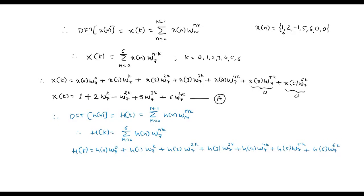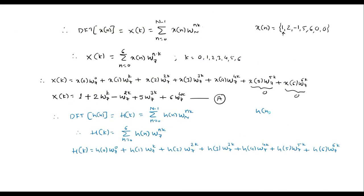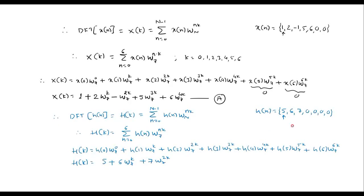Here H(n) values are H(0)=5, H(1)=6, H(2)=7, and the rest are zero — defined for n=0, 1, 2 only. Therefore H(k) = 5 + 6·W_7^k + 7·W_7^(2k). For all remaining terms the value is zero. We call this equation B.